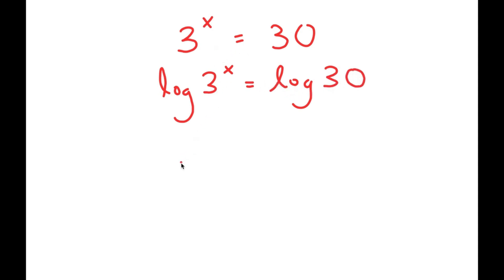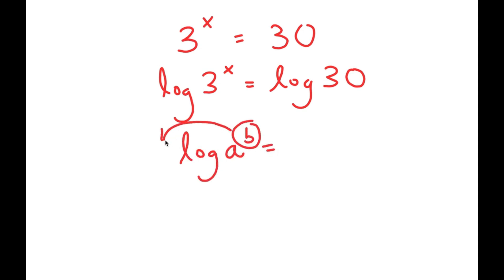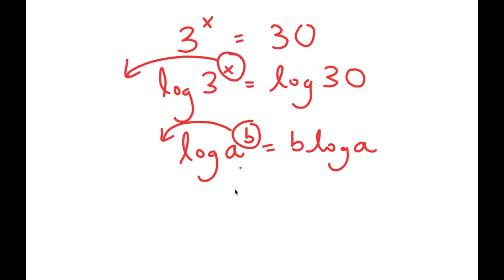Now, if I have something in the form log a to the power of b, I can move b to the front, so this turns to b times log a. In this case, I have log 3 to the power of x, and I can move x to the front, so I get x times log 3 is equal to log 30.